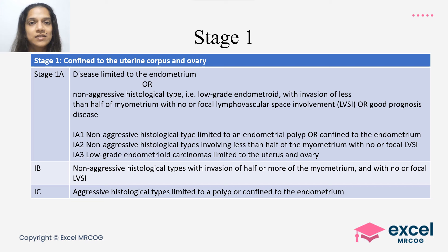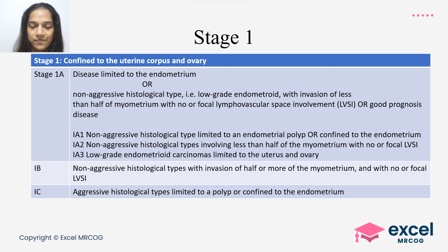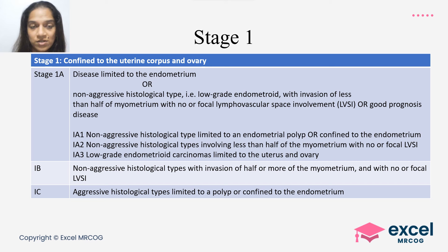Stage 1b is the non-aggressive histological variety with invasion of half or more of the myometrium with no or focal LVSI. Stage 1c is where the aggressive histological type enters the staging — specifically, aggressive type limited to a polyp or confined to the endometrium. Aggressive variety extending into the myometrium is not included in stage 1 at all.